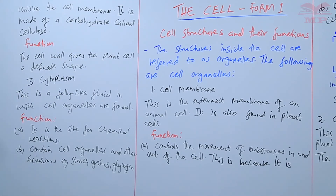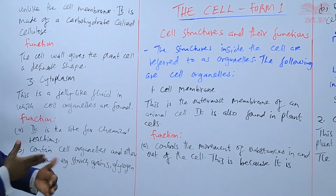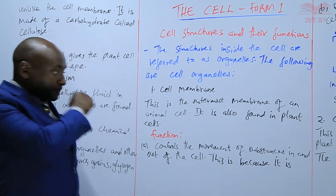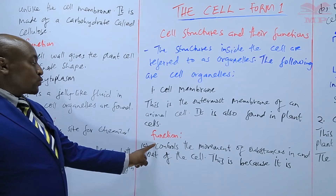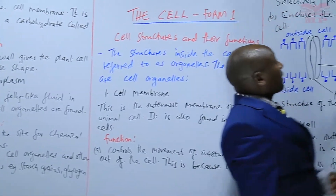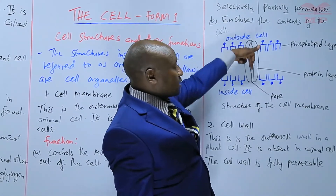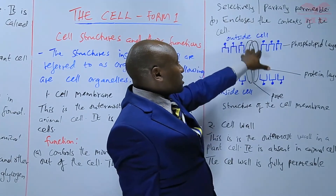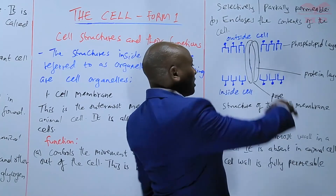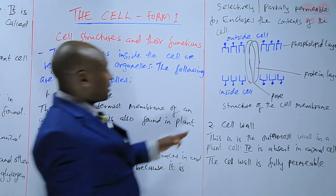So we have learned about cell structures and their functions, referred to as organelles — we have covered three of them. The first is the cell membrane, the outermost membrane of an animal cell, also found in plant cells. Its function is to control the movement of substances in and out of the cell because it is selectively — or partially — permeable, meaning it only allows some substances in but not others. That is why it has pores. It also encloses the contents of the cell.